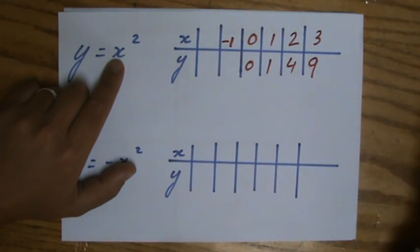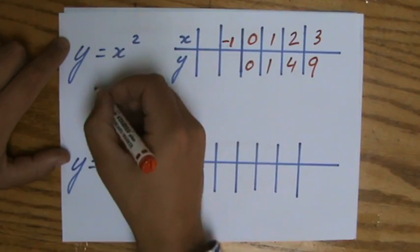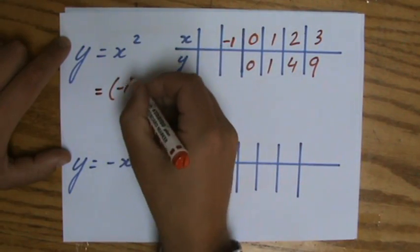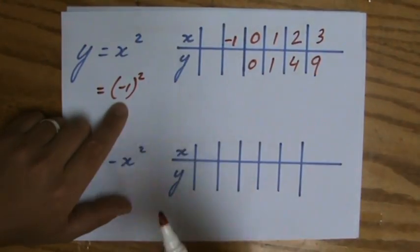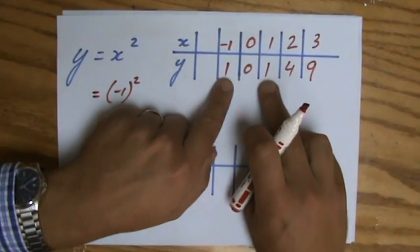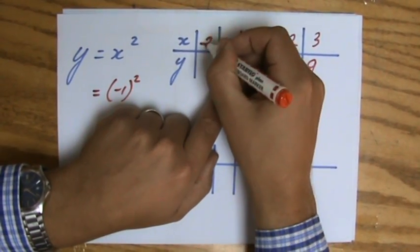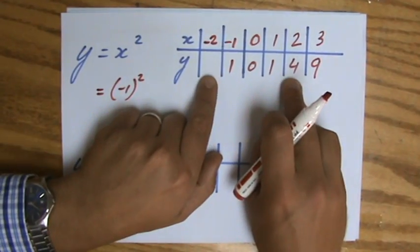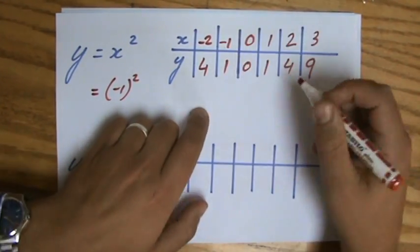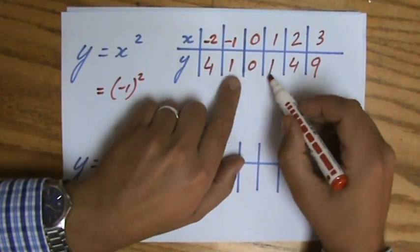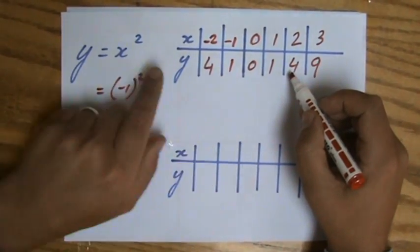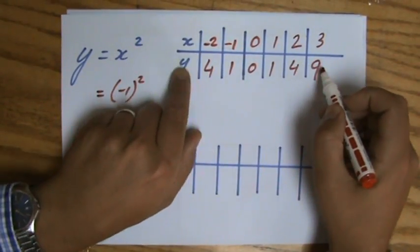When x is minus one, y is going to be, now be careful if you need a calculator for that, minus one squared in brackets. Minus one times minus one is also one. When x is minus two, minus two times minus two is four. And perhaps you already see some sort of pattern symmetry. When x would be minus three, y is going to be nine.